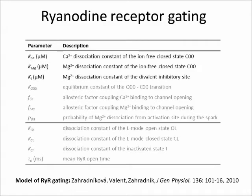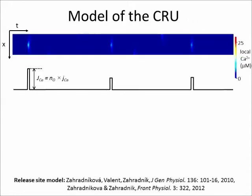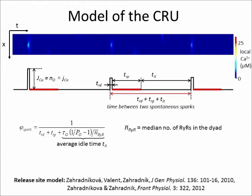These 7 parameters include: the dissociation constants of the ions at the activation and the inhibitory sites; the constant Ko00, which is a measure of the tendency of the ion-free channel to stay closed; allosteric factors of calcium and magnesium; and the parameter PDs, characterizing the rate of magnesium unbinding from the ryanodine receptor. A model of the calcium release unit can then be constructed. Calcium release flux is proportional to the number of open ryanodine receptors and lasts for the release duration. After spark termination, the release unit stays in a refractory state for the duration of the refractory period. The observed frequency of sparks, phi-spark, that is, the average number of spontaneous sparks per release site per second, is then a function of the ryanodine receptor open probability, its open time, release duration, and refractory period.